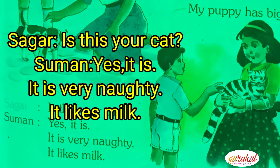Sagar: Is this your cat? Kya yah billi tumhari hai? Suman: Yes, it is. Haan, yah billi meri hai. It is very naughty. Yah bahut natkhat hai. It likes milk. Yah dudh pasand kerti hai.